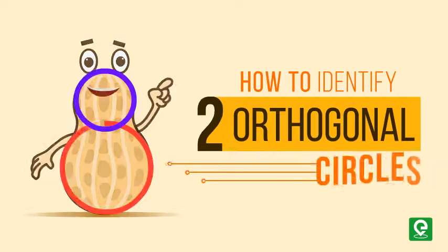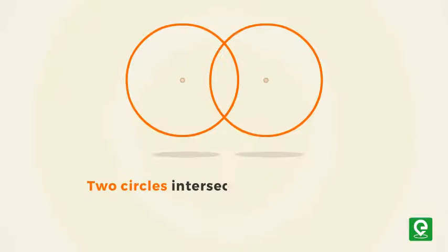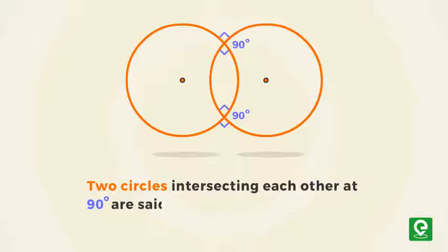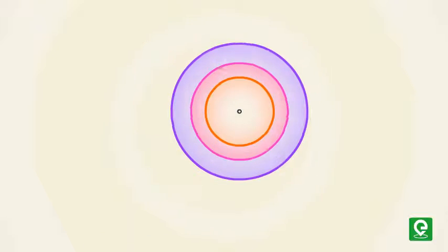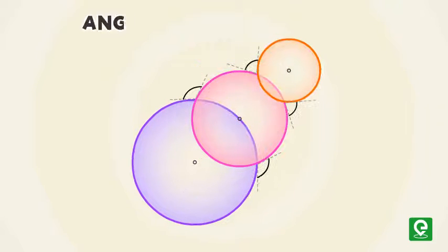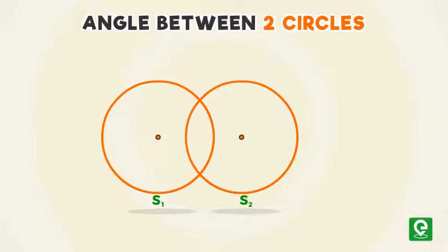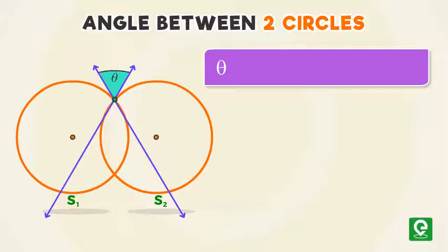How to identify orthogonal circles. Two circles intersecting each other at 90 degrees are said to be orthogonal circles. To have a better understanding of the concept, let's first comprehend the meaning of angle between two circles. The angle between two intersecting circles is the angle between the tangent lines drawn at their point of intersection.